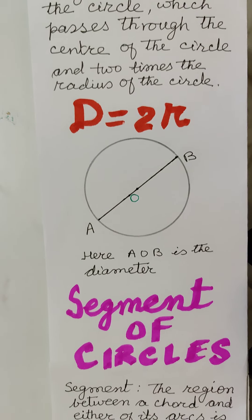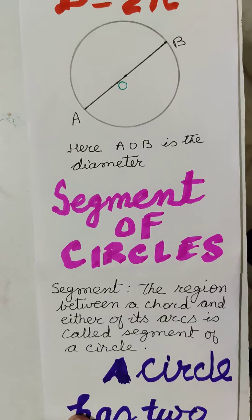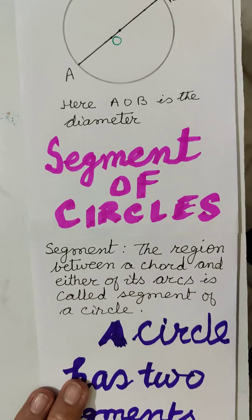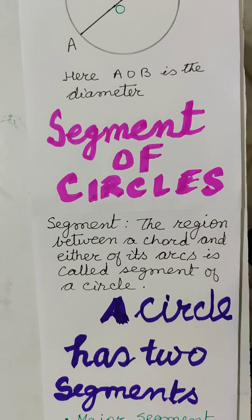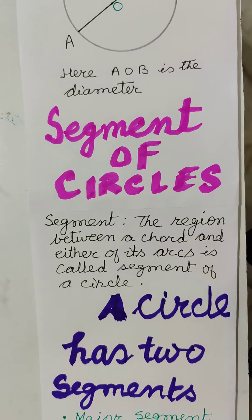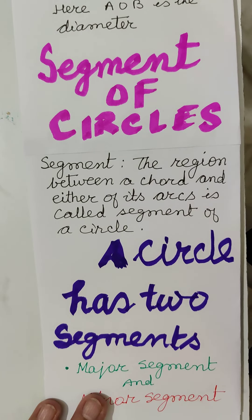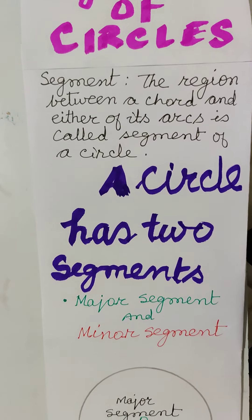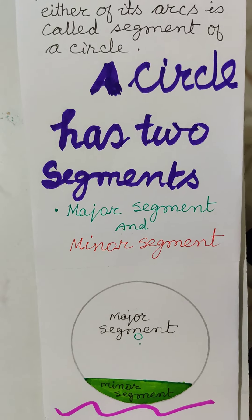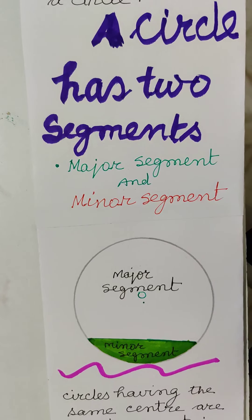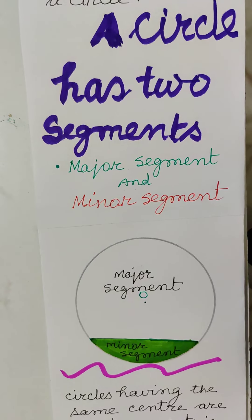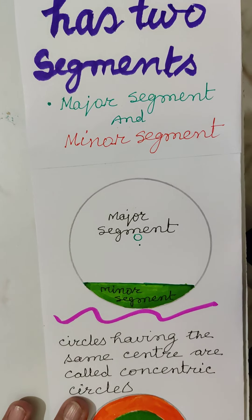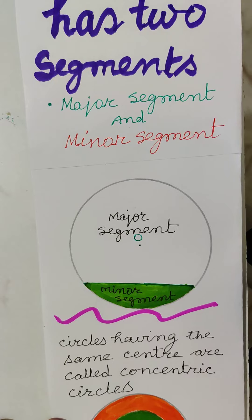Segment of the circle: the region between a chord and either of its arcs is called a segment of a circle. A circle has two segments — the major segment and the minor segment. The region in white is known as the major segment and the region in green is known as the minor segment.